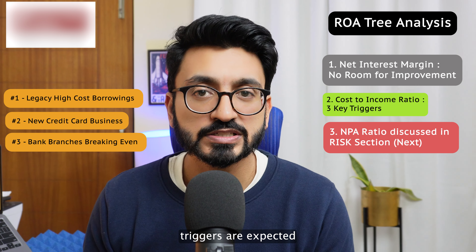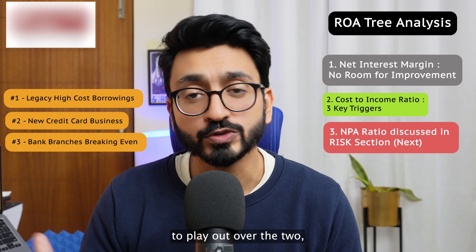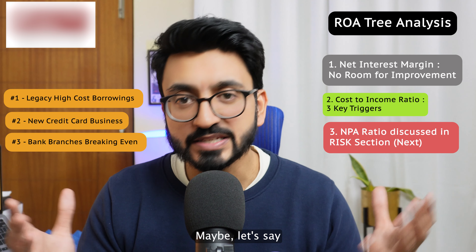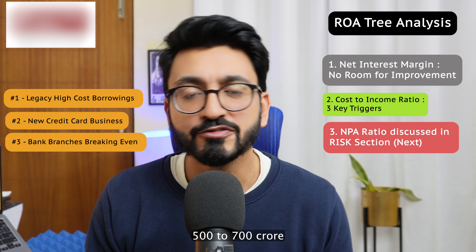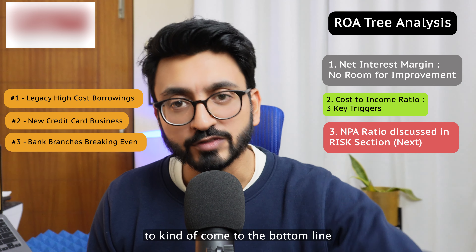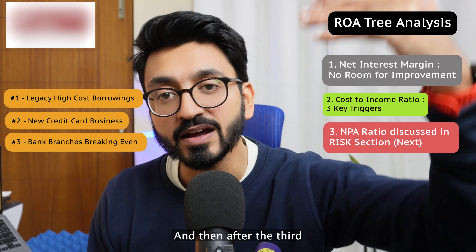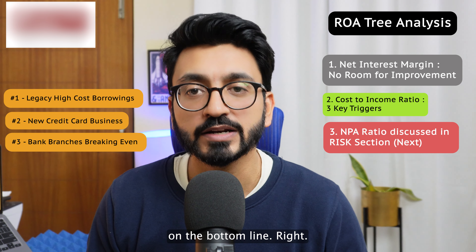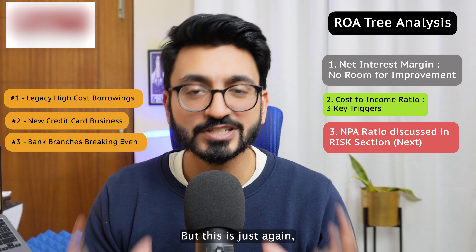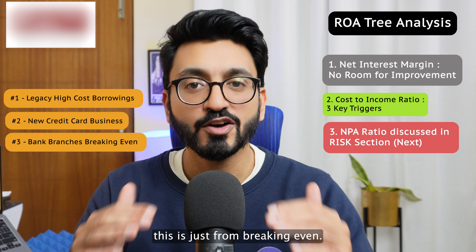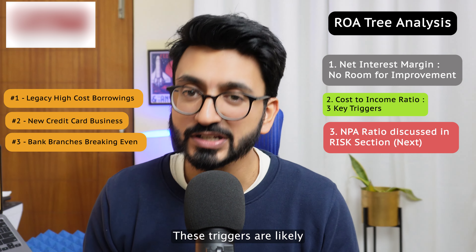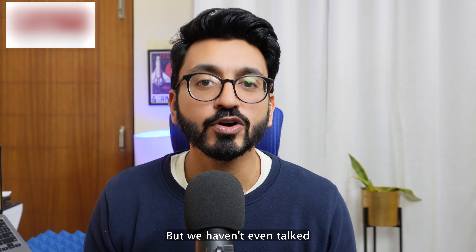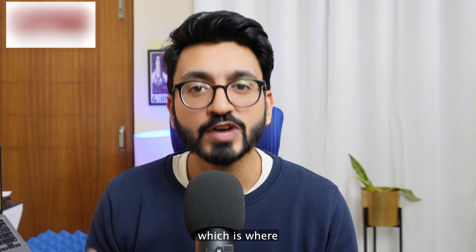So there are huge triggers in place to help the bank earn higher profits. These three operating leverage triggers are expected to play out over two to three years. This entire 1,500 crores is not coming in the next year — maybe around 500 to 700 crores will come to the bottom line over the next three years, and after the third year from today you'll see the full impact on the bottom line. I want to emphasize: this is just from breaking even on these triggers — we haven't even talked about the growth side.